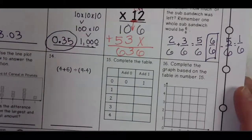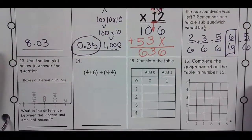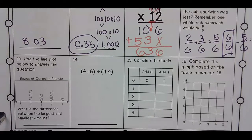It says boxes of cereal in pounds. What is the difference between the largest and the smallest amount? What is the difference between the largest and the smallest amount?